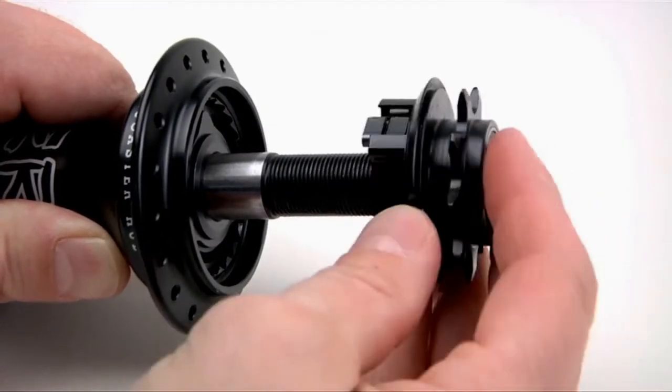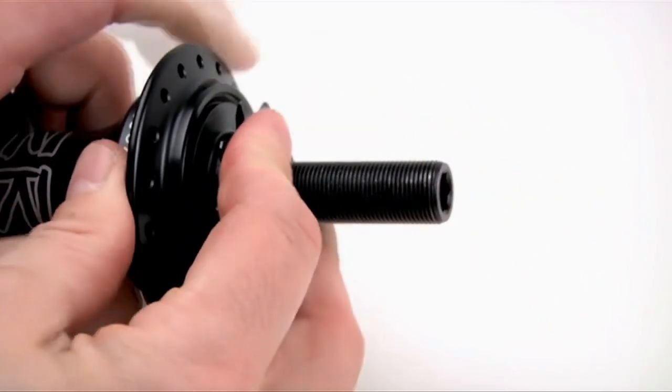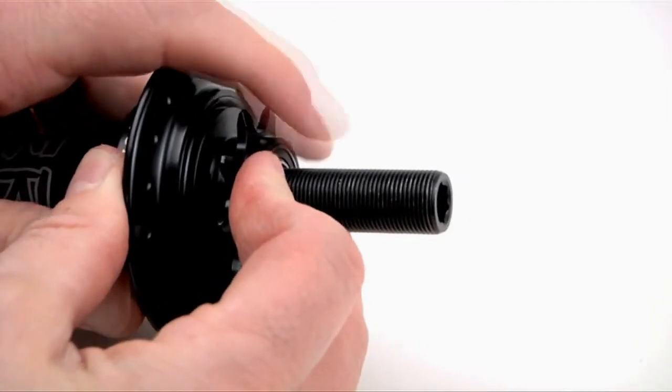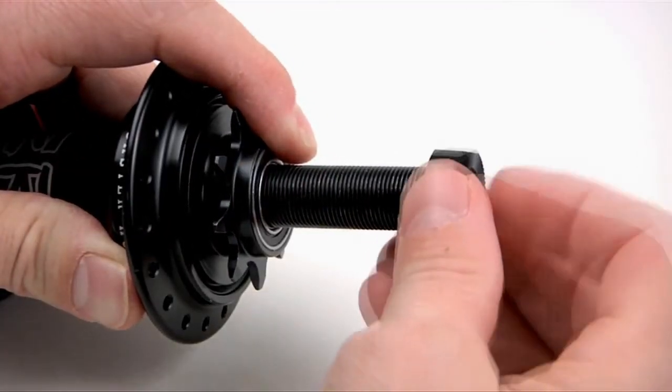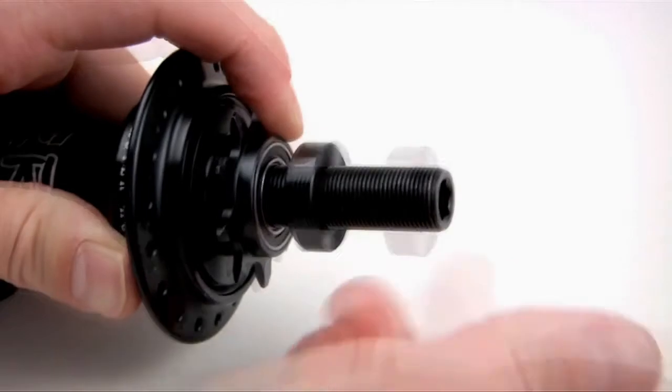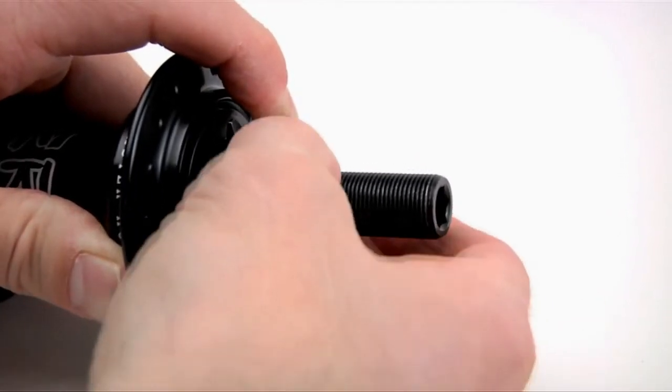Now carefully take the reassembled driver and slip it over the axle and slide it all the way back into the hub. You might have to wiggle and turn the driver into position because of the tight tolerances. Thread the cone nut back onto the hub.